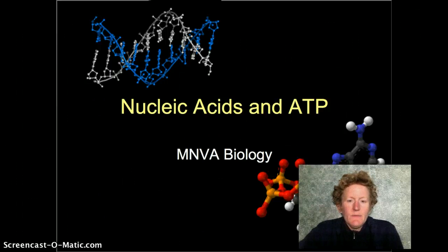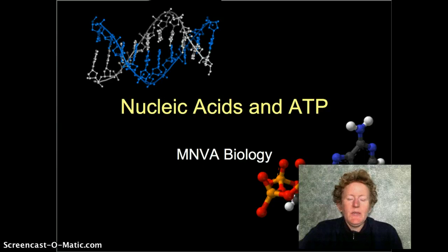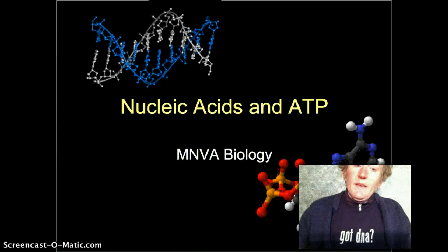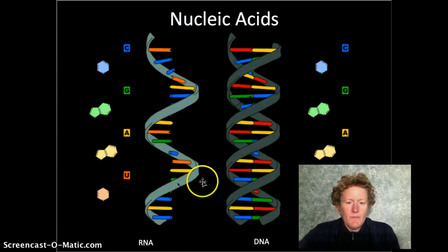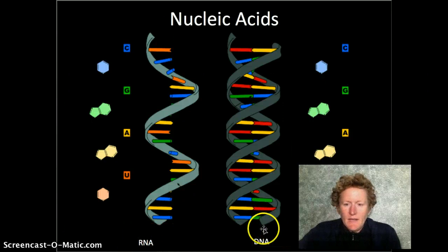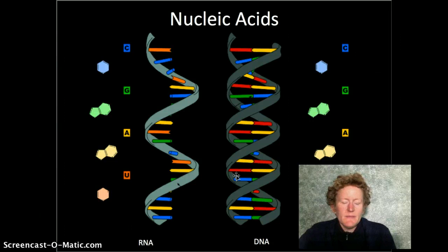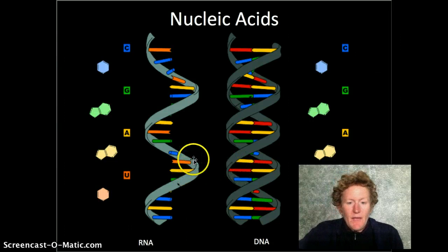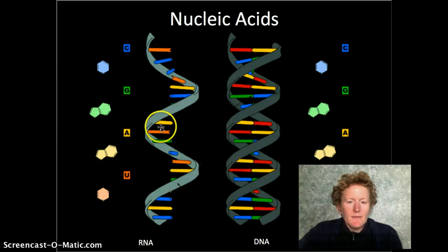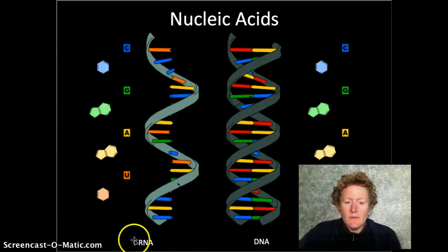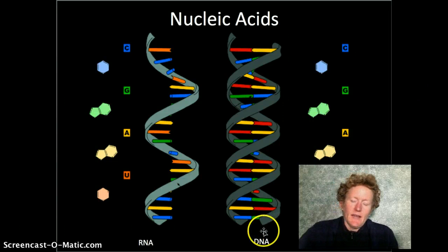Hello biologists. Today we're going to talk about nucleic acids and ATP — that's quiz 221 and 223. We're going to answer the question: got DNA? And yes you do. It's deoxyribonucleic acid and everyone's got DNA. We're going to look at two molecules today primarily, RNA and DNA. You can see there are some differences and some similarities.